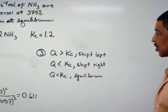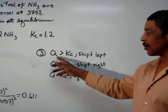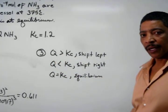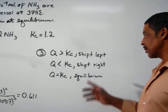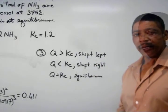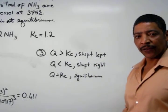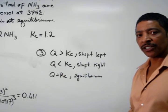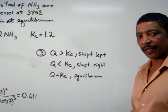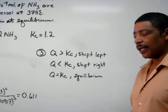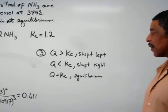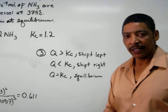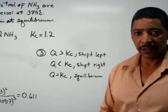In general, if the reaction quotient is greater than the Kc value, then the reaction must shift to the left. If the value of Q is less than the value of Kc, then the reaction should shift to the right. If the value of Q is equal to the Kc, then the reaction is in equilibrium.